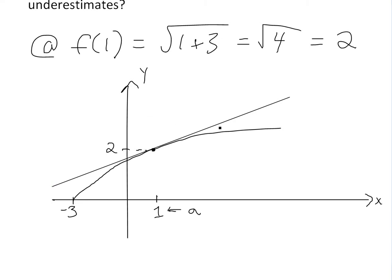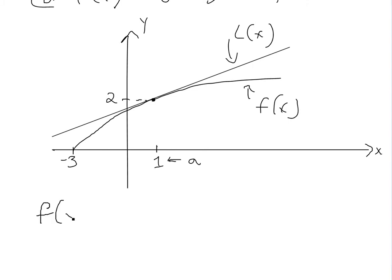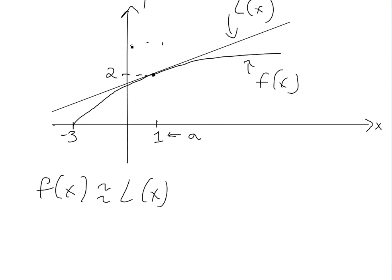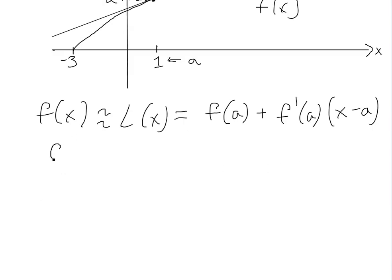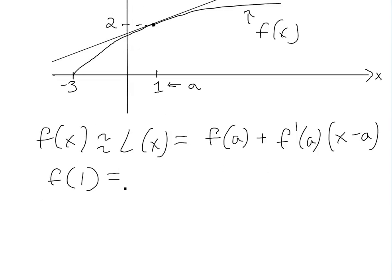Near this point, we can approximate f(x) by writing the linearization L(x), which equals f(a) plus f'(a) times x minus a. So f(x) is approximately equal to L(x) near a, and we're only dealing with this local area. We know f(1) equals two, and a equals one.